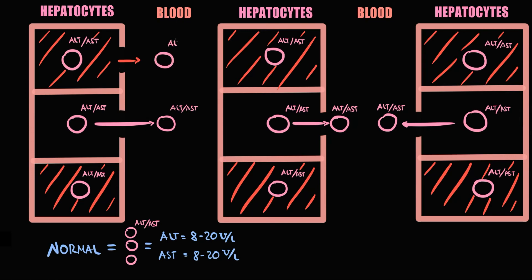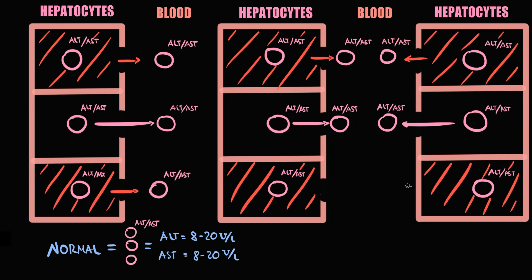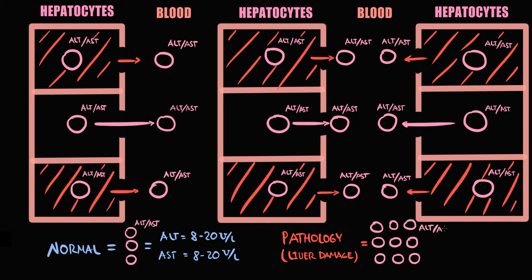The more hepatocytes die, the more of their inner content — including ALT and AST — enters the blood. As a result, blood levels of ALT and AST increase. For example, ALT may rise to 100 units per liter and AST to 70 units per liter. In normal conditions, only self-renewal produces these enzymes, but with liver injury, additional hepatocyte death causes this elevation of ALT and AST in the blood.